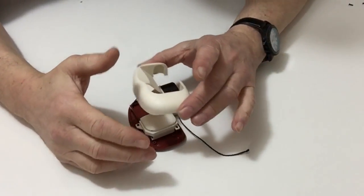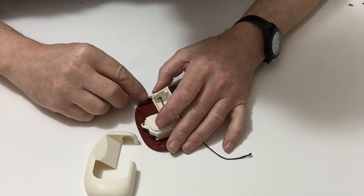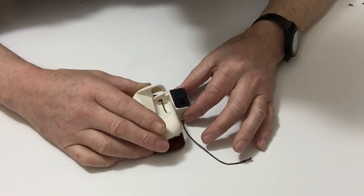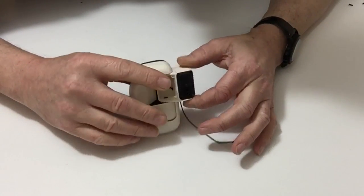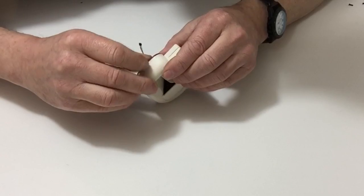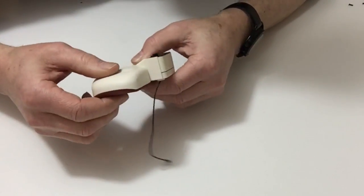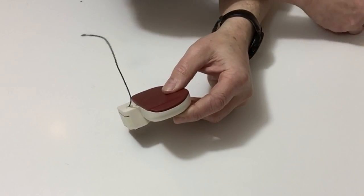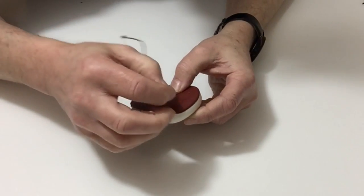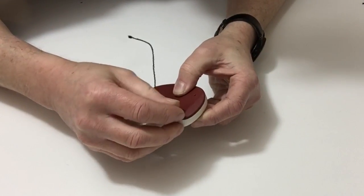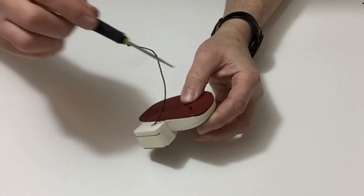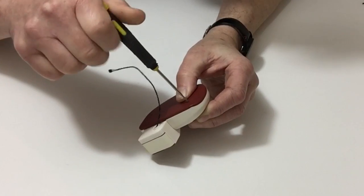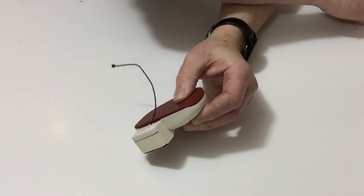Now take the right side foot cover and, making sure that the cables are out of the way, carefully place the foot cover over the sole like so.